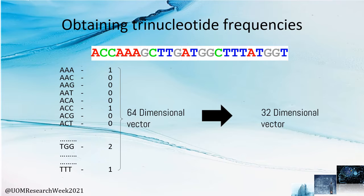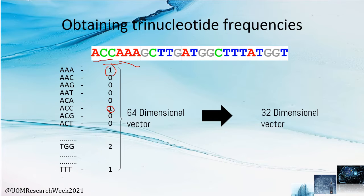K-mer counting works as follows: given a nucleotide string of DNA, if we count trinucleotides (k=3), that is 3-mers, starting from the beginning, ACC is the first k-mer, then CCA is the next. We count the number of occurrences of each k-mer — for example, there is 1 ACC and 1 AAA in this string. For 3-mers, this produces a 64-dimensional vector, and with reverse complement k-mer additions applied, it is reduced to a 32-dimensional vector.